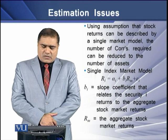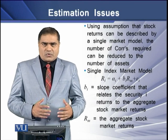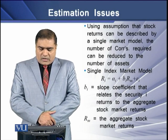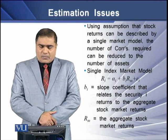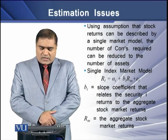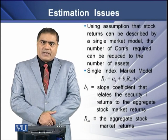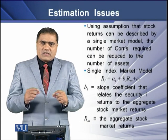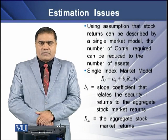Using the assumption that stock returns can be described by a single market model, the number of correlations required can be reduced to the number of assets. The single index market model is: Ri = alpha + beta(Ri) × RM + error component, where beta is the slope coefficient relating security i returns to aggregate stock market returns, and RM is the aggregate stock market return.